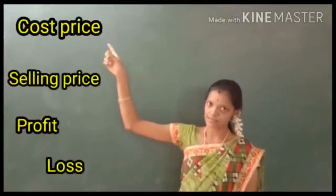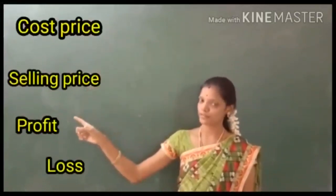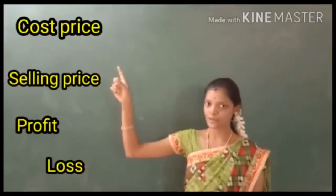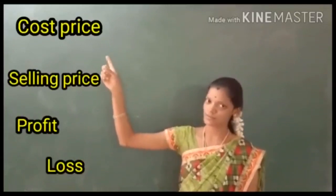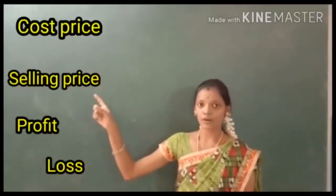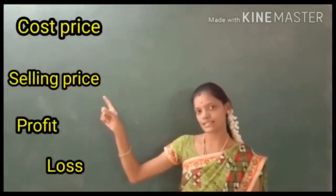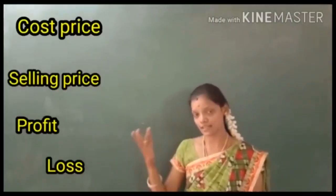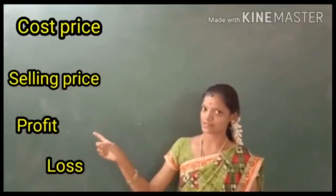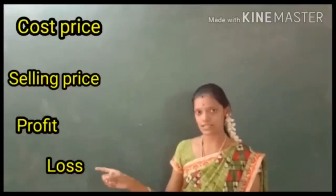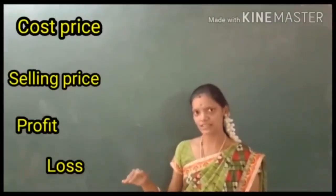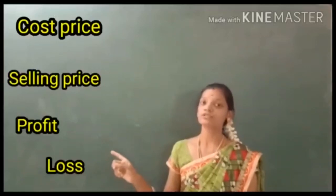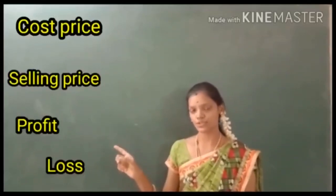The keywords are: cost price, selling price, profit, and loss. What is cost price? When you purchase something, the price of that object is called cost price. For what amount we are selling that object, that is called selling price. If the selling price is greater than the cost price, then profit occurs. If the selling price is lesser than the cost price, then loss occurs. These are the four important keywords you should know before entering into the exercises.